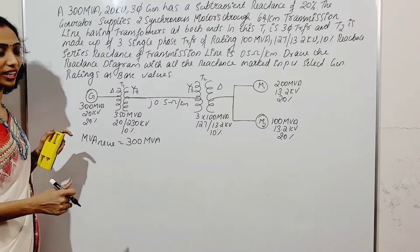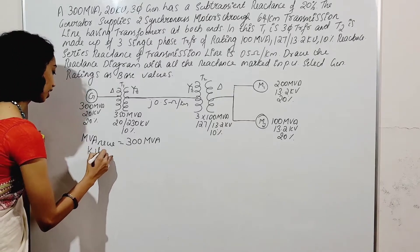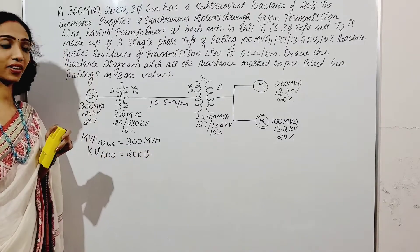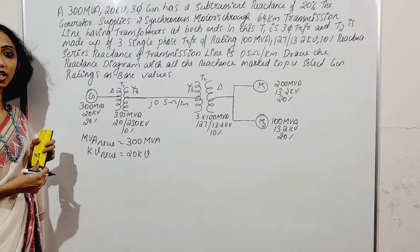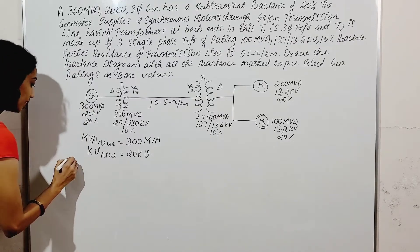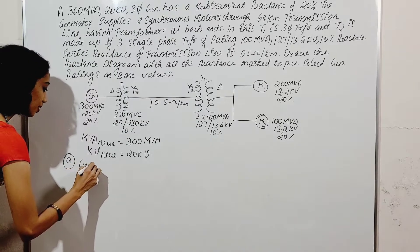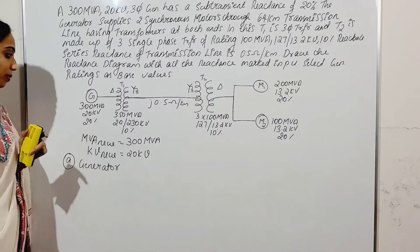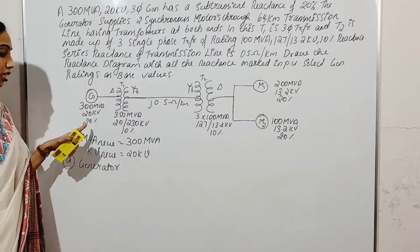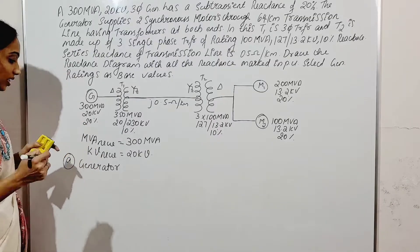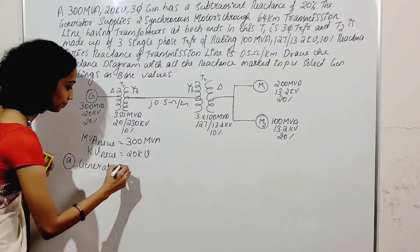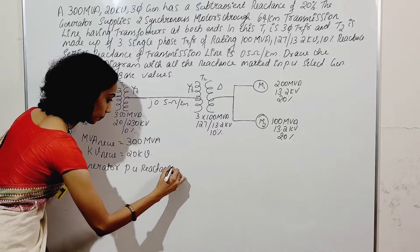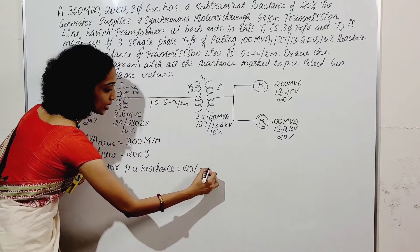MVA new is equal to 300 and KV new is equal to 20 kV. That means the generator per unit reactance — first we write the name: generator per unit reactance. Our base values are the generator values. Per unit reactance of the generator is 20%, which is equal to 0.2.